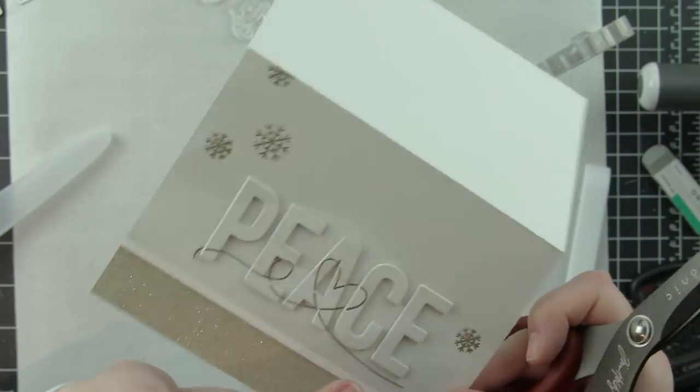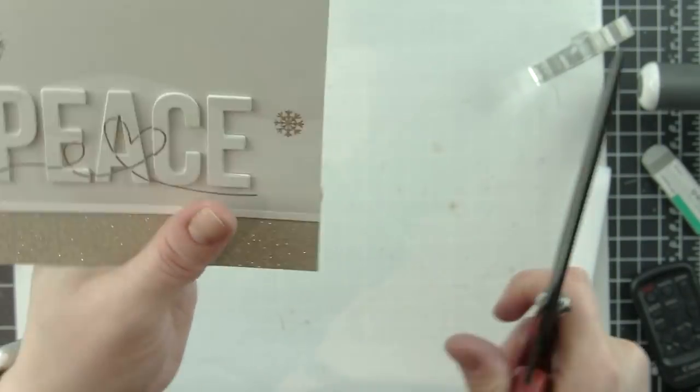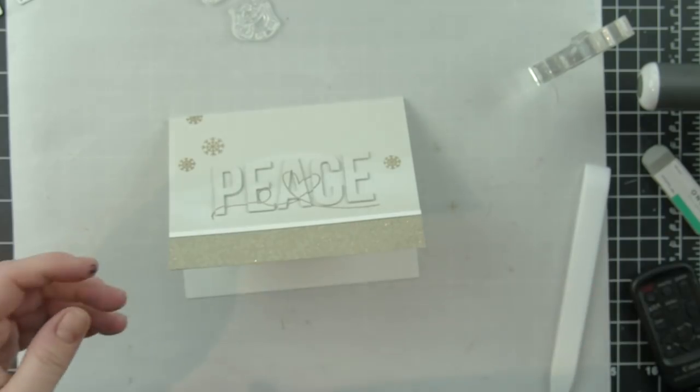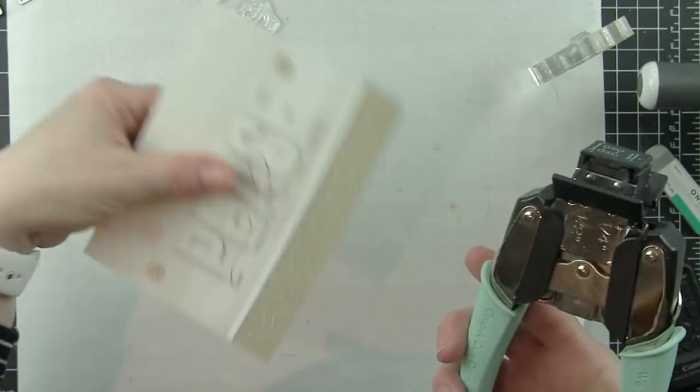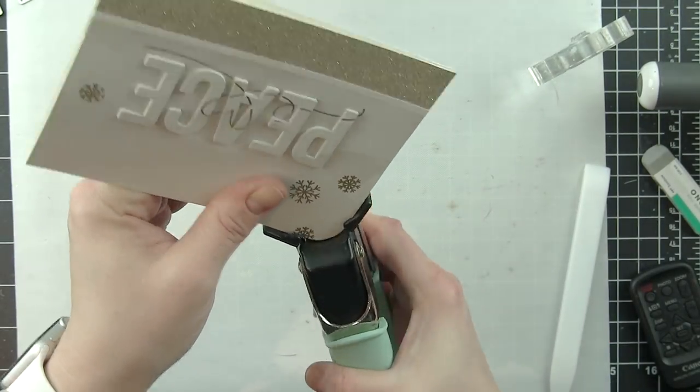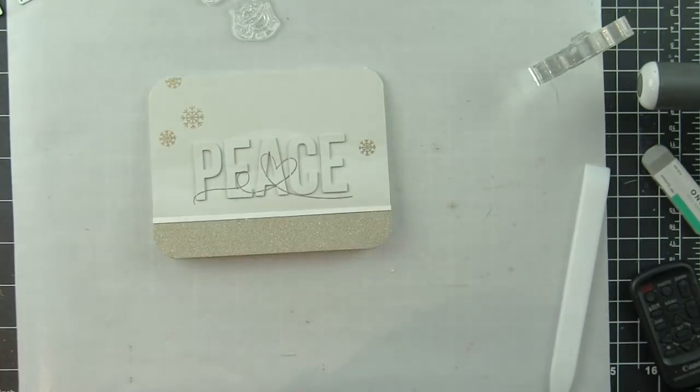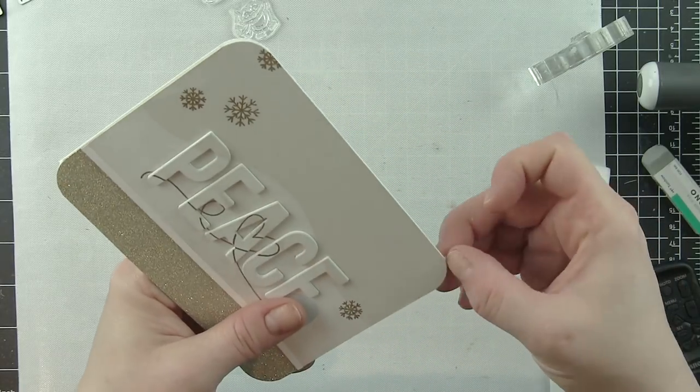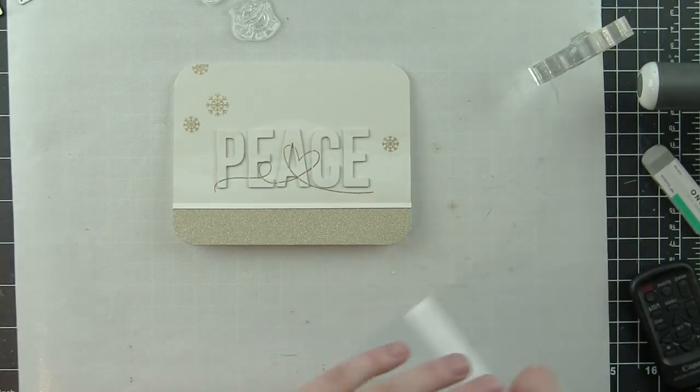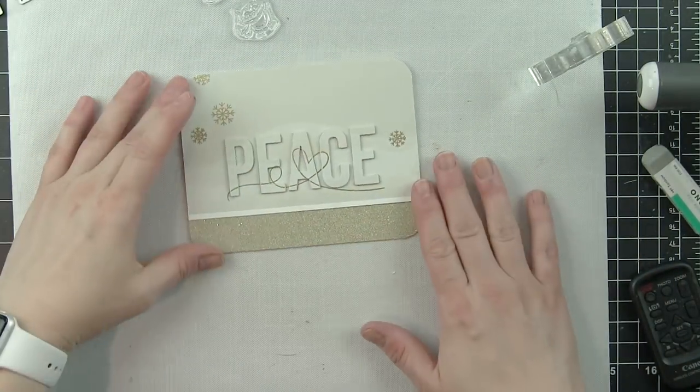I'm using these, I think they're a nine and a half inch shears from Tim Holtz from Tonic Studio and then I'm going to round all four corners of my card with a half inch corner rounder. I like those rounded corners.